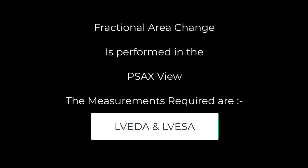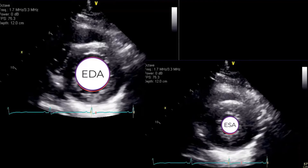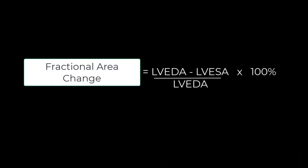Let's now look at fractional area change. This is a similar concept to fractional shortening, except that area is used instead of diameter. Fractional area change is performed in the parasternal short axis view at the mid-LV cavity level. The measurements required are LV end diastolic area and LV end systolic area. The image on the left shows LV end diastolic area being measured, while the image on the right shows measurement of LV end systolic area. Fractional area change is determined by the difference between end diastolic area and end systolic area divided by end diastolic area multiplied by 100%. A fractional area change of less than 40% usually indicates LV systolic dysfunction.